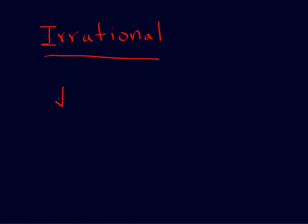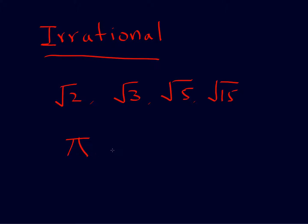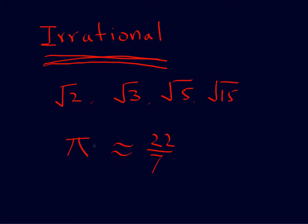Some examples of irrational numbers are: square root of 2, square root of 3, square root of 5, square root of 15 — all of these are irrational numbers. Pi is also irrational. We approximate it as 22 over 7, but it is actually not equal to 22 over 7. It is truly an irrational number; it can't be expressed as a fraction, but for practical purposes we use 22 over 7. So these numbers can't be expressed as P over Q.